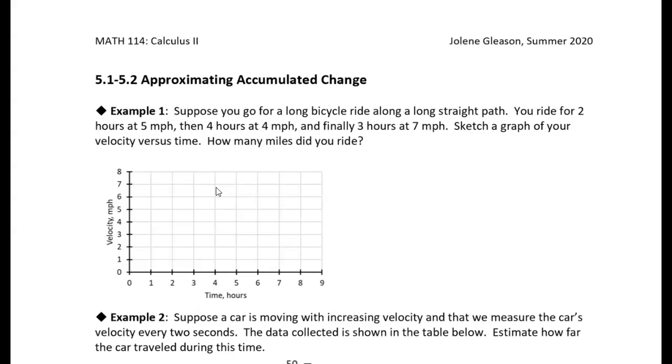So let's suppose you go for a long bike ride along a long straight path. You ride for two hours at five miles per hour, then you ride for four hours at four miles per hour, and finally you ride for three hours at seven miles per hour.